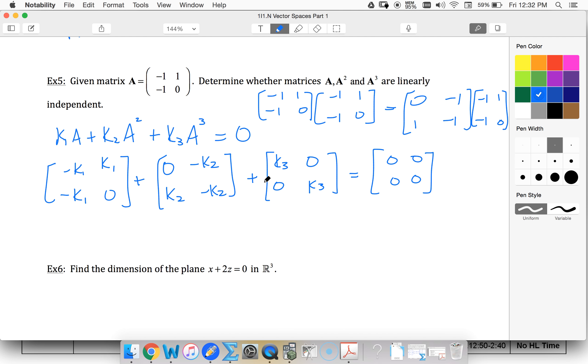All right, so combining all of this together, I would end up with a single matrix of -k1 plus k3, k1 minus k2, -k1 plus k2 - notice these two are the same equation - and then we have -k2 plus k3.